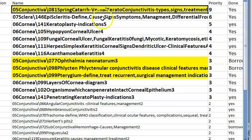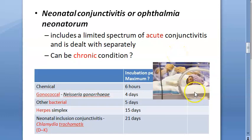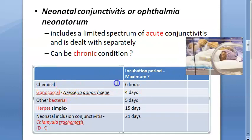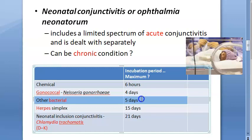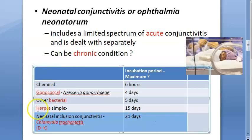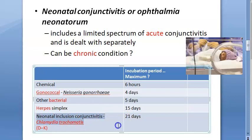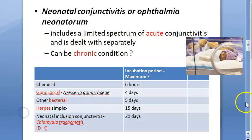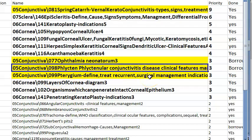Ophthalmia neonatorum: know the incubation periods. Chemical cause: 6 hours. Gonococcal (Neisseria gonorrhoeae): 4 days. Other bacterial: 5 days. Herpes: 15 days. Neonatal inclusion conjunctivitis (chlamydia): 21 days.